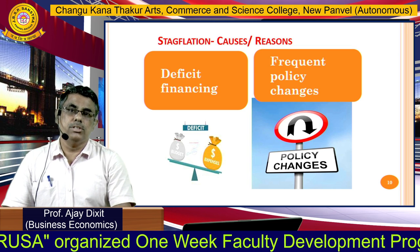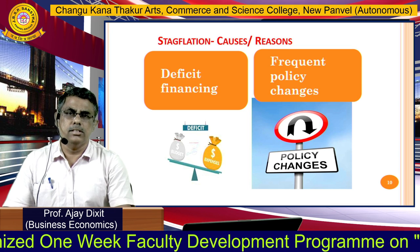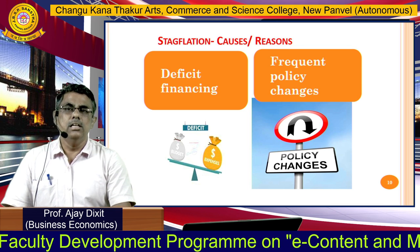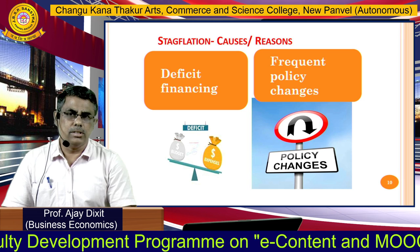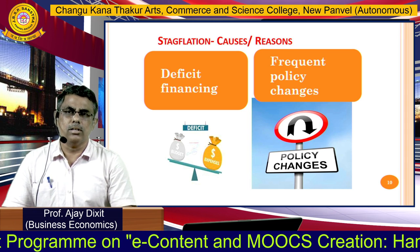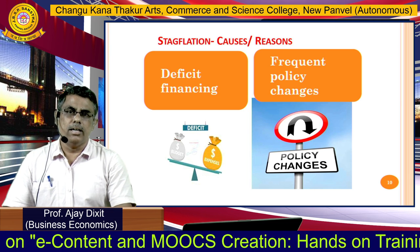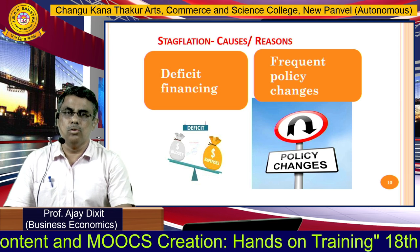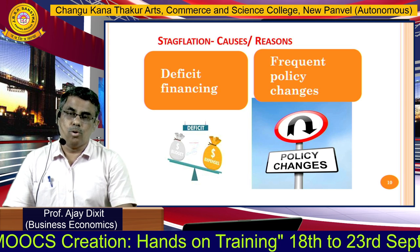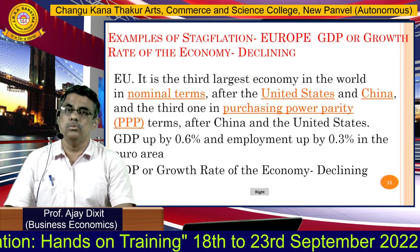Frequent policy changes also cause stagflation. If a government takes a decision and then changes its own rules and regulations after six months or a year, businessmen and the economy cannot adapt to these frequent changes, ultimately leading to a reduction in output. But cost remains, so cost of production increases while output reduces.